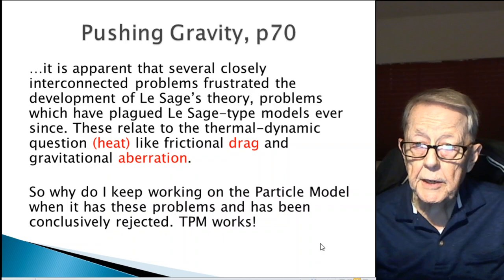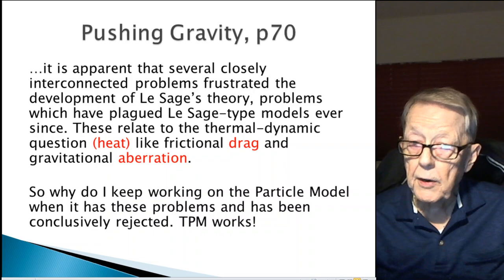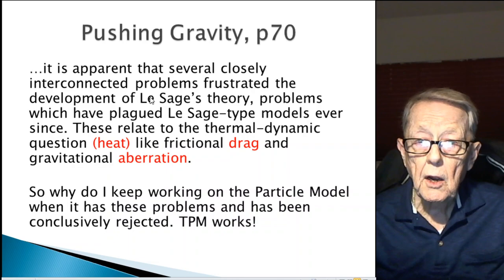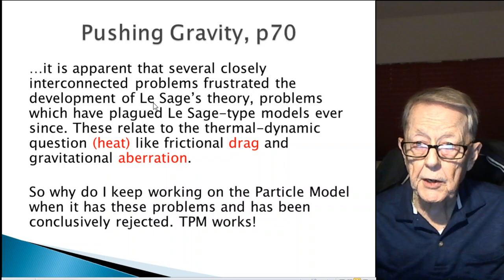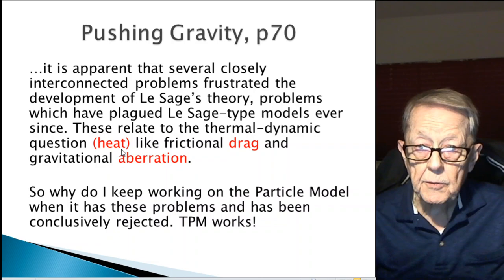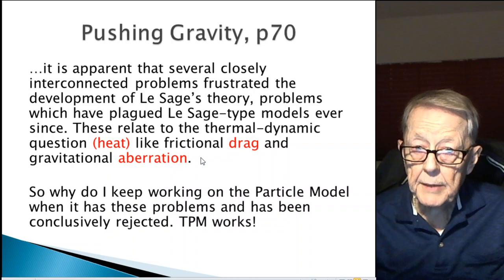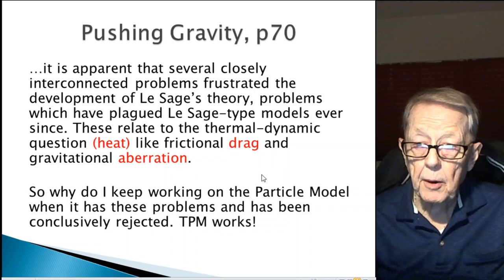In the book, Pushing Gravity, I refer to this book many times, on page 70 is where I first found the idea that there were three main objections. The article I referenced has many more, but I'm covering only three. And it says on page 70, it's apparent that several closely interconnected problems frustrated the development of Lesage's theory, problems which have plagued Lesage-type models, like TPM, ever since. These relate to the thermodynamic question, which I consider to be heat, and like frictional drag and gravitational aberration. So I'm going to cover heat, drag and aberration.